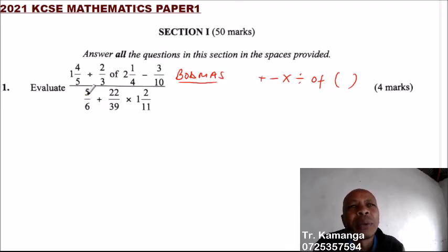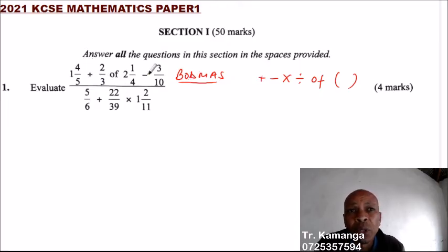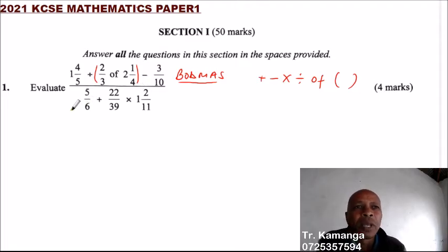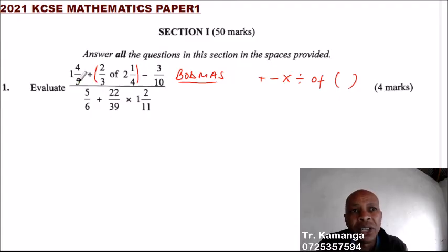Looking at our question, we have the numerator. You can see we don't have brackets, but we have 'of.' So that is the first operation we are going to do, then we follow the others in the order of BODMAS. We write the mixed fractions into improper fractions to be able to work with them.